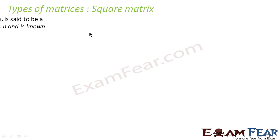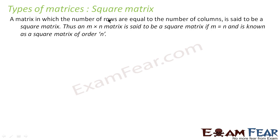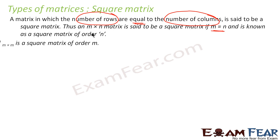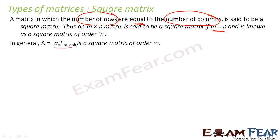In a square matrix, the number of rows and number of columns are equal — that is, m is equal to n. This is known as a square matrix of order n. The general representation is aij, and here it is m by m because m is equal to n.